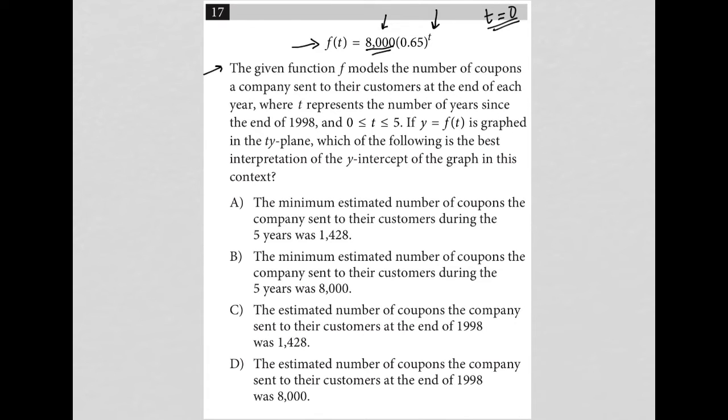If y equals f of t is graphed in the ty plane, which of the following is the best interpretation of the y-intercept? Well, when t is 0, y would be 8,000.